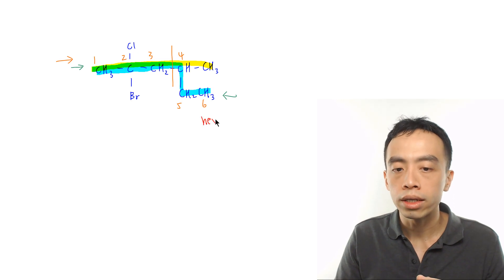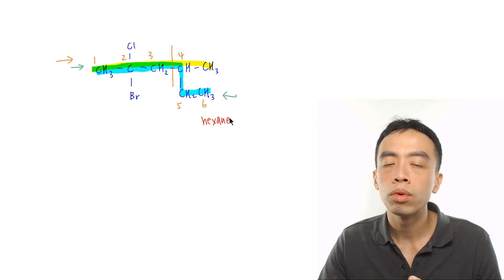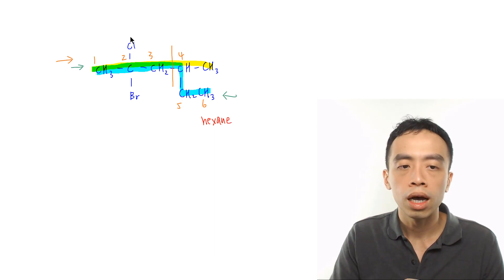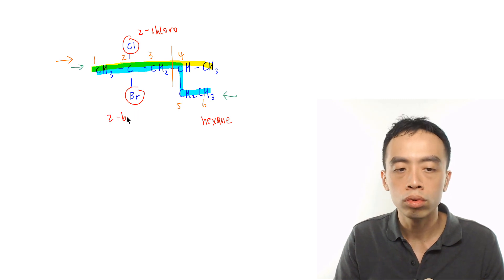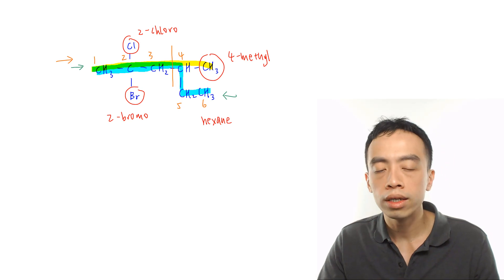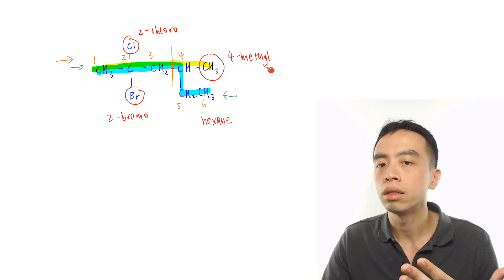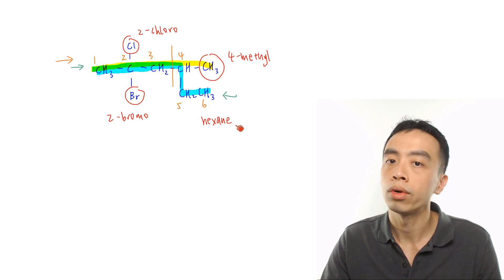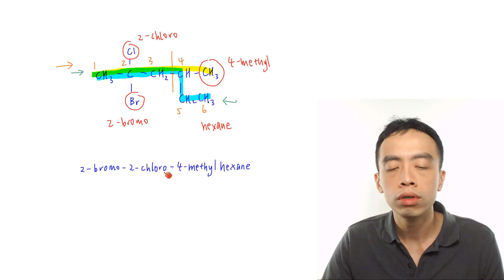The parent is settled. The next thing we want to worry about is the name of the substituents. I have a chloro group attached to the second carbon — this would be a 2-chloro. Then I have a bromo group attached to the second carbon — this is a 2-bromo group. I have a methyl group attached to carbon number four, so this is a 4-methyl group. Finally we combine everything together arranged by alphabetical order: bromo first, then chloro group, then methyl group, followed by the parent hexane. So the name for this compound would be 2-bromo-2-chloro-4-methylhexane.